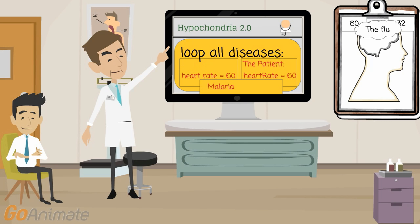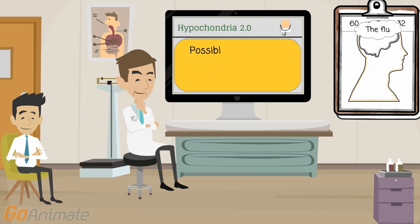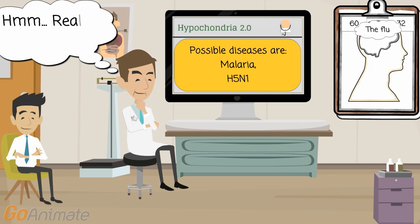You would collect the matching diseases into a list, which is just another variable. Finally, you would display this list of the possible diseases to the user as the output.